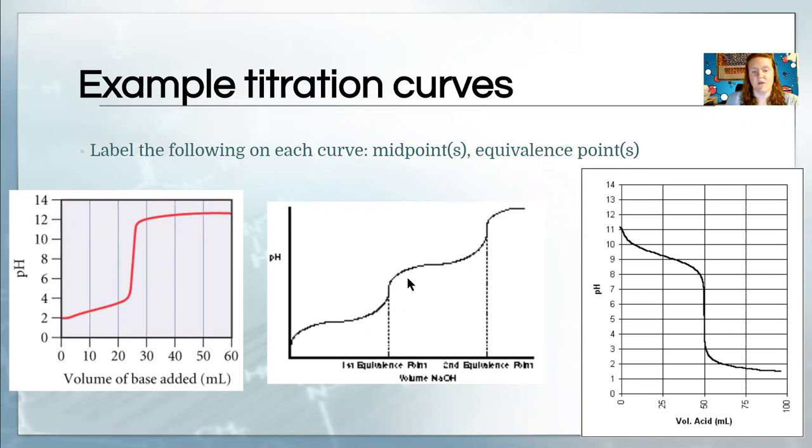Over here is something with two protons to lose, so we end up with two equivalence points actually. The first one is the dotted line here, and each of those have their own midpoint. I got these graphs off the internet, I don't know what they are, but ascorbic acid is a diprotic acid, so it might be that. There's a lot of diprotic acids, but that's one of them. Remember, that's vitamin C, so it's delicious.